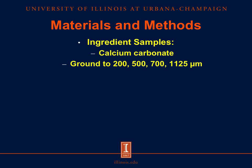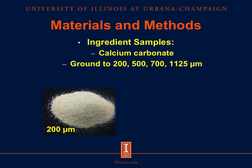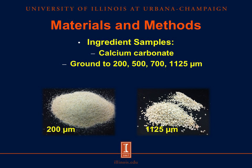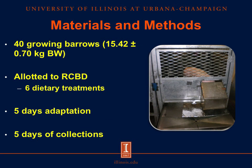For this experiment, calcium carbonate was ground to four different particle sizes: 200, 500, 700, and 1,125 microns. Here I have illustrated the smallest particle size at 200 microns and the largest particle size at 1,125 microns. To test our hypothesis, we conducted a metabolism experiment using 40 growing barrows with an initial body weight of 15.42 kg. Barrows were randomly allotted to one of six dietary treatments and were individually housed in metabolism cages.